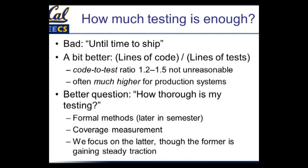Sadly, for a long time, if you asked this question in industry, the answer was basically: we have a shipping deadline, so however much testing we can do before that deadline, that's how much. You can do a bit better. There are some static measures, like how many lines of code does your app have versus how many lines of tests. In a well-tested piece of software, the number of lines of tests can go far beyond the number of lines of code — integer multiples are not unusual. For research code or classwork, a ratio of maybe 1.5 is not unreasonable. In a lot of production systems where they really care about testing, it's much higher than that.